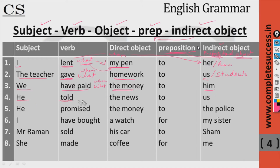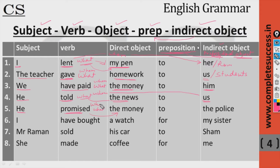He told — what? — the news — to whom? — to us. He promised — what? — the money — to whom? — to the police. I have bought — what? — a watch — for whom? — for my sister.